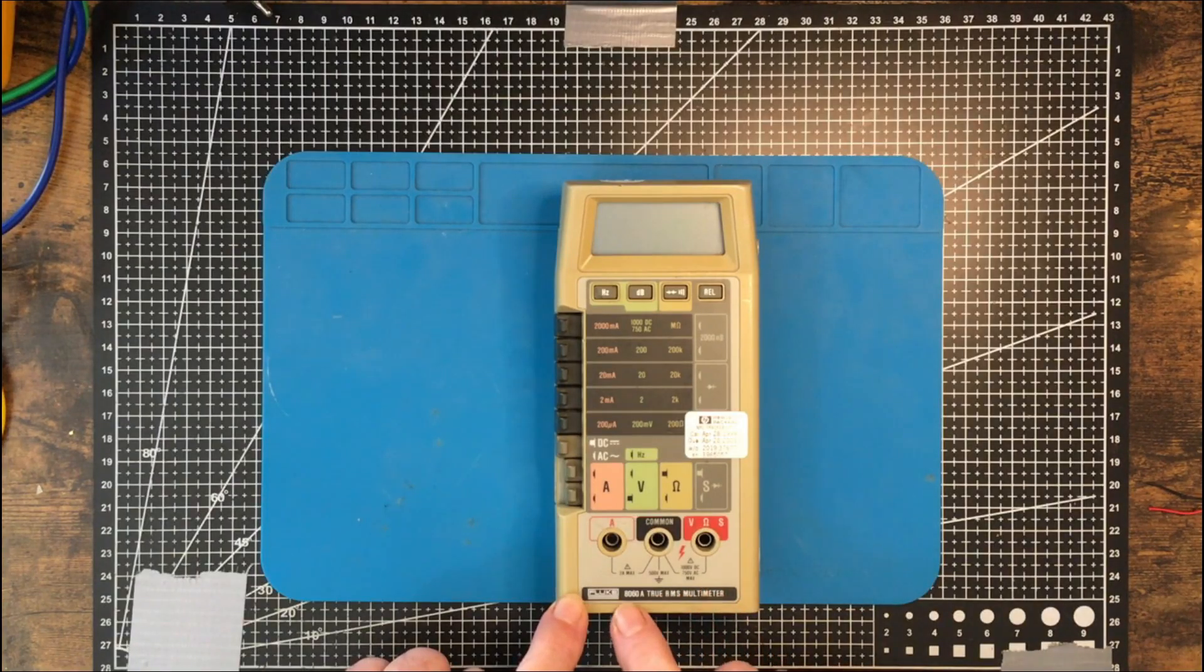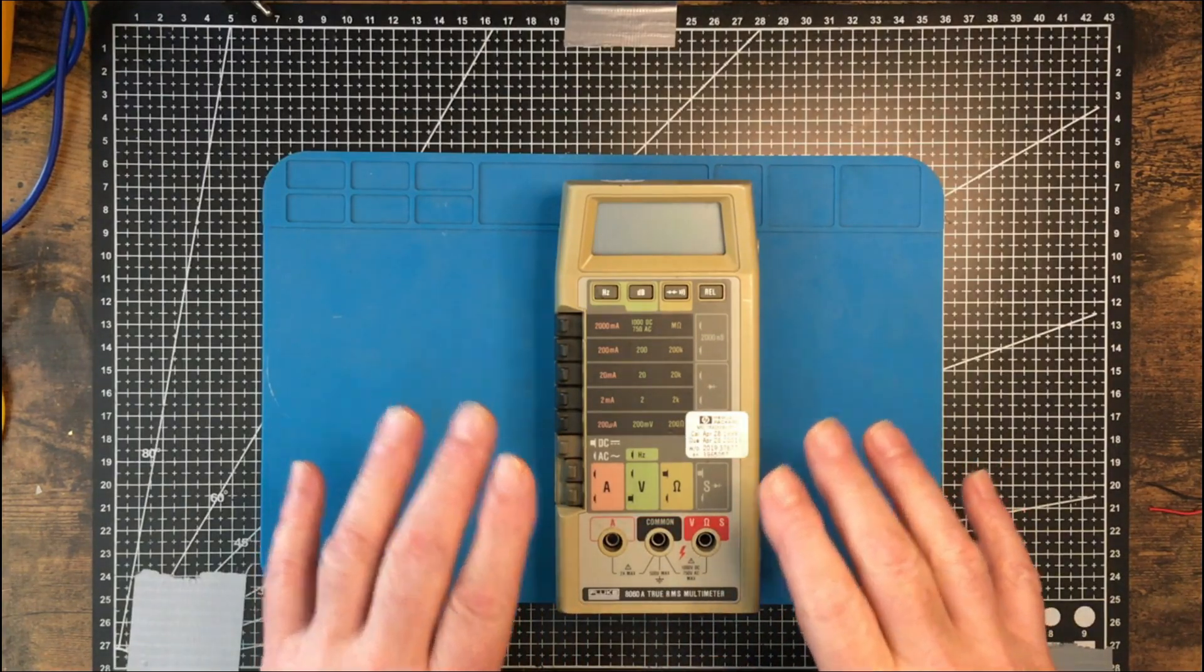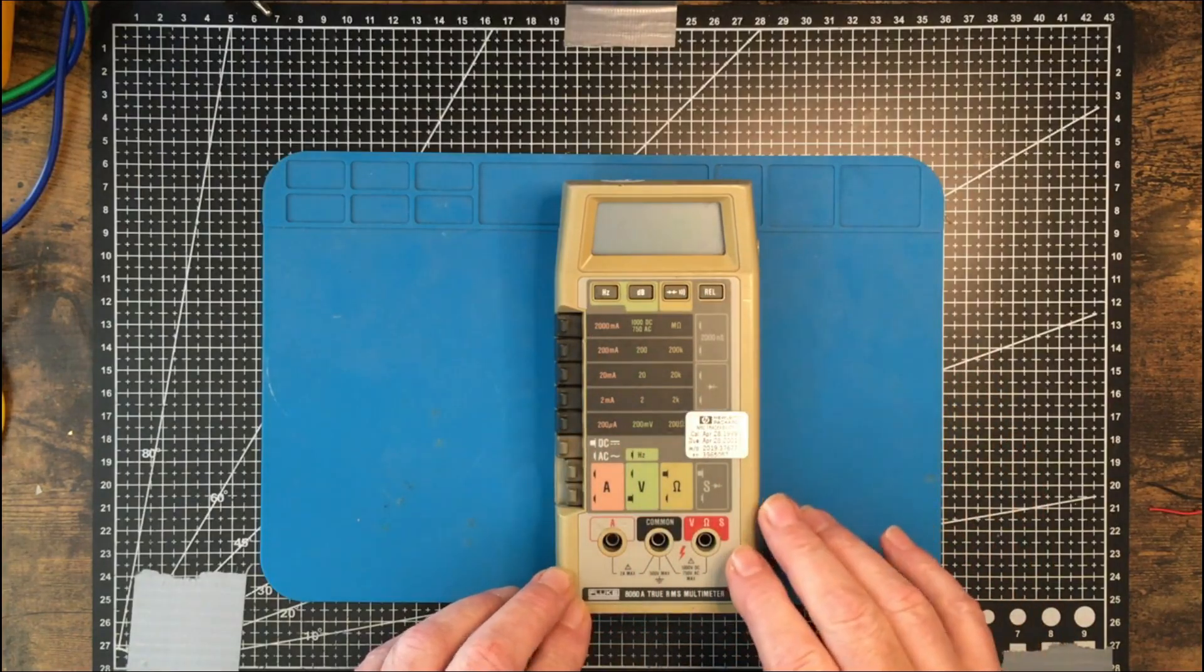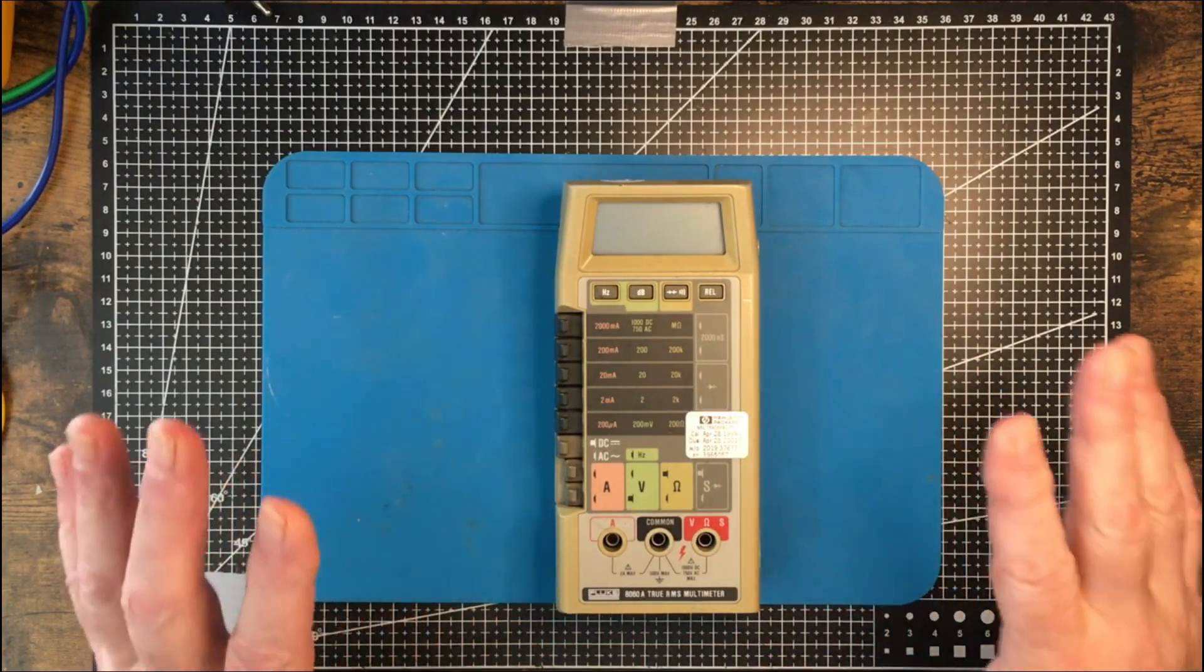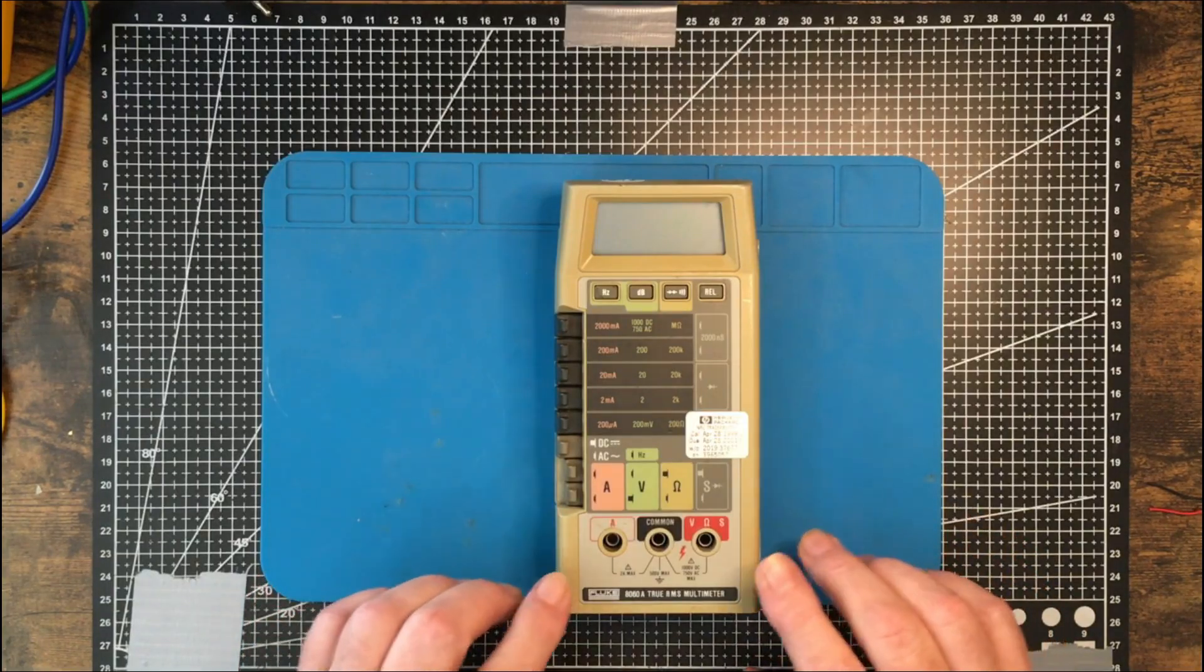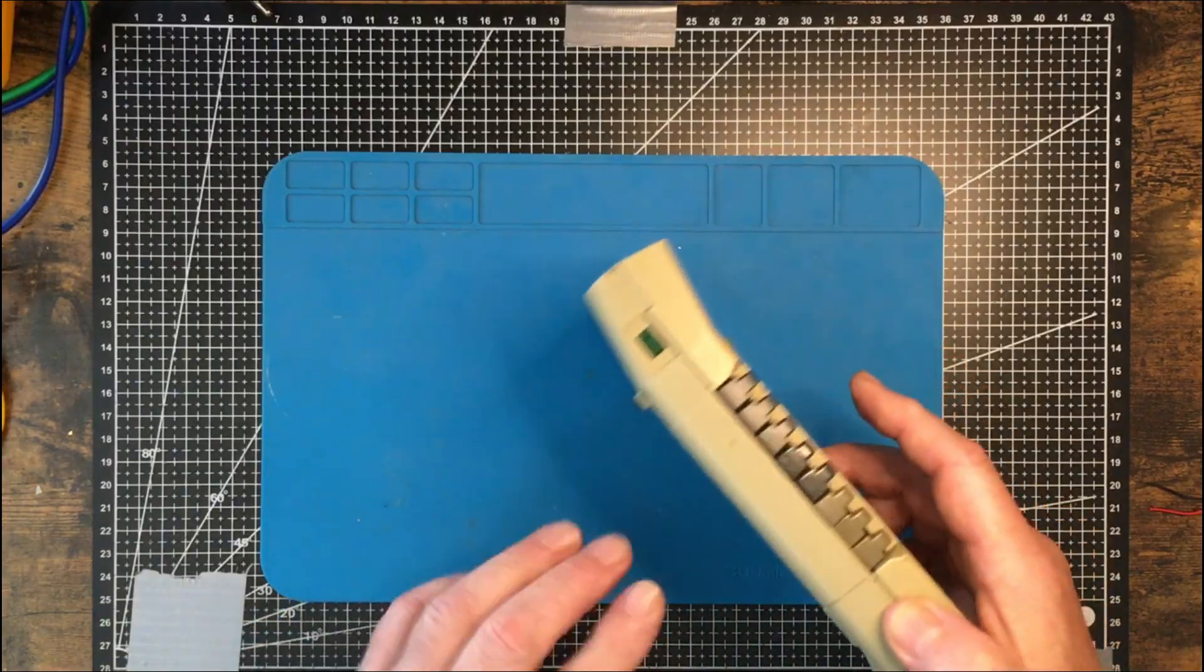They advertised it as an 8062 and I thought that was a good price for the 8062. The 8062 has got a little bit less than this, a few less features. It doesn't have the hertz with the dB and some other little things. It's the cost-reduced version of this.